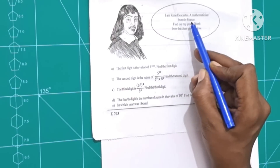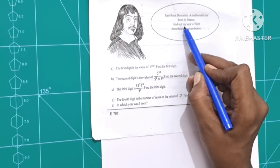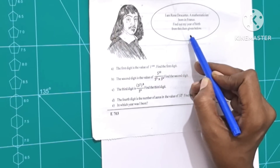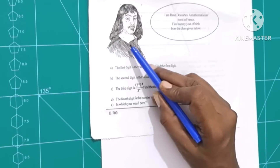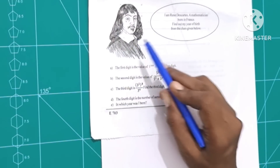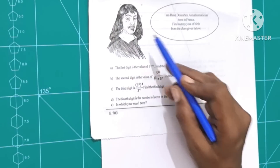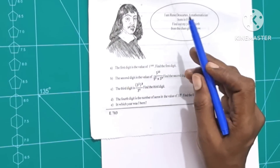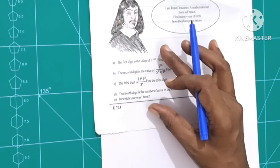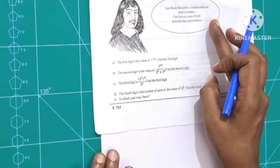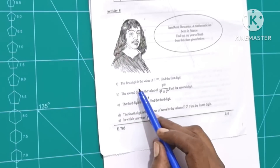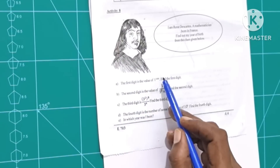I am Rene Descartes, a mathematician born in France. Find out my year of birth from the clues given below. The first digit is the value of 1 raised to 1000.